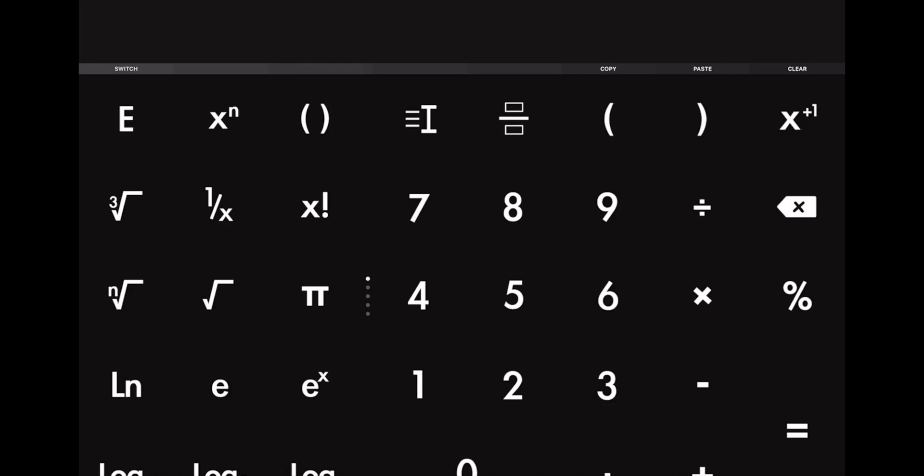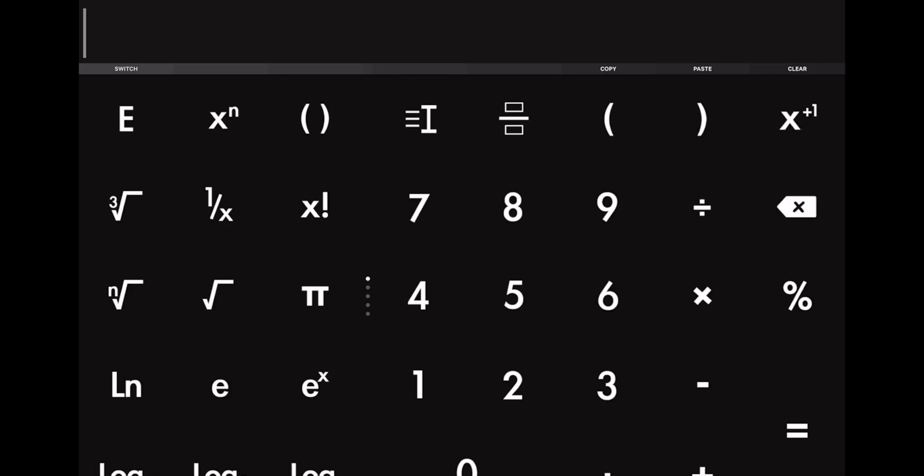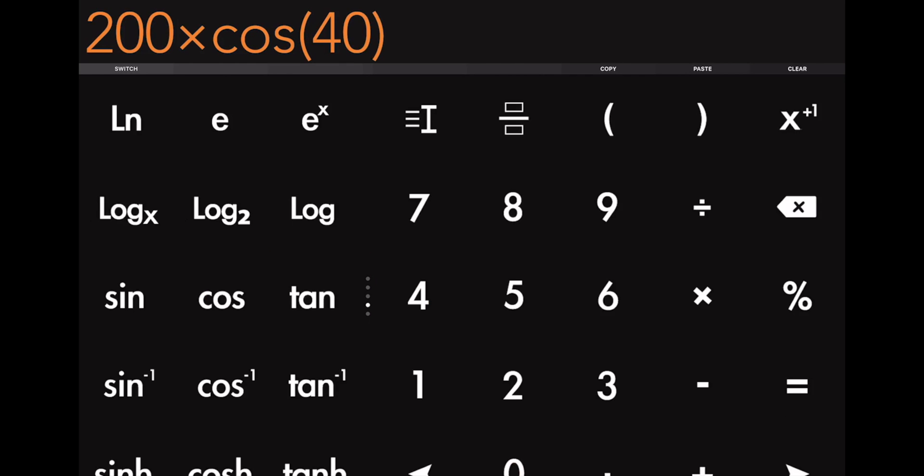Here we have a scientific calculator, and I want to make sure that it's in degrees, since our angle was given to us in degrees. So we have 200 times cosine of 40.